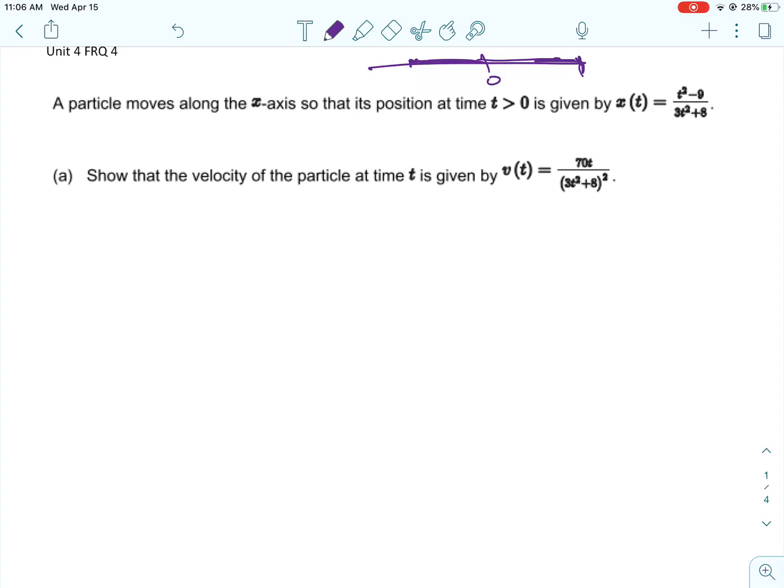So if we want to know where the particle is at two seconds or whatever, it doesn't tell you what time is in. But anyway, you put 2 in, and if it's positive it's on the right, if it's negative it's on the left.